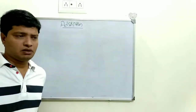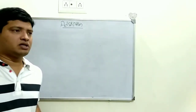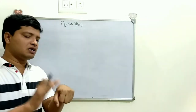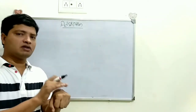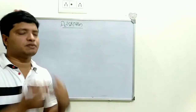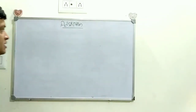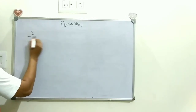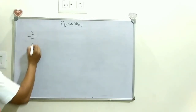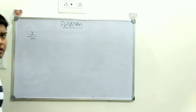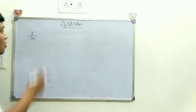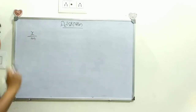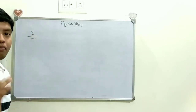How do we express adsorption? Let's say some amount of gas is adsorbed on a given mass of adsorbent. This is expressed as the amount of gas adsorbed per unit mass of adsorbent — how much gas is adsorbed per given mass of adsorbent.